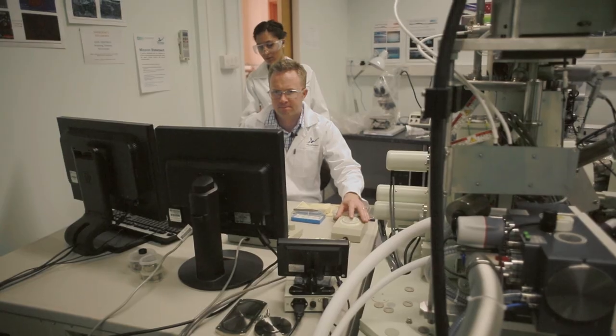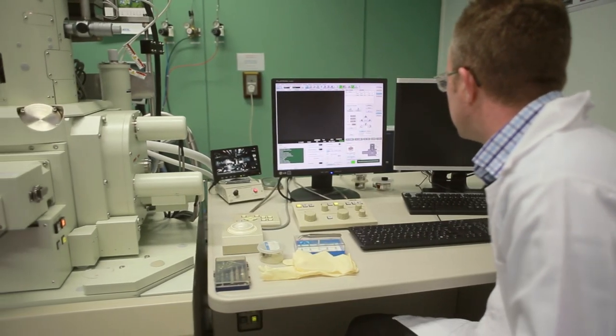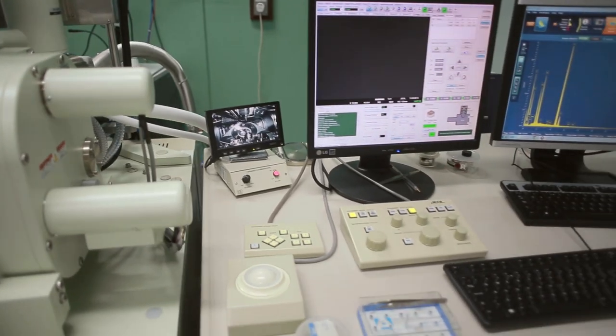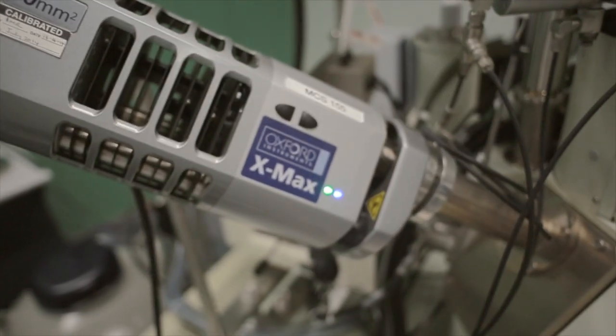It's through these images that we're able to understand how the different particles pack around one another and how the polymer, the otherwise invisible glue, holds those particles and the paint film together.